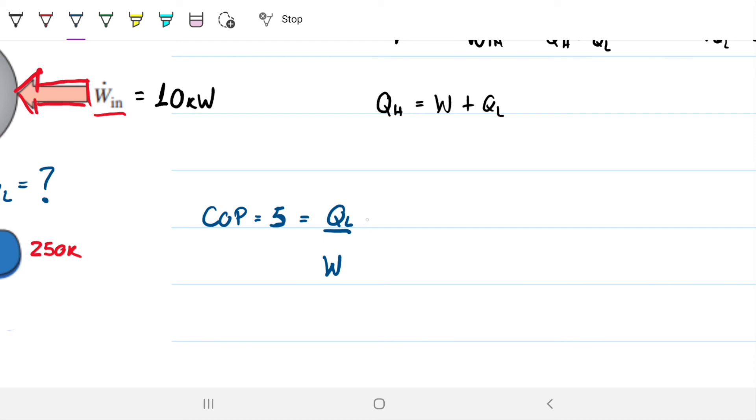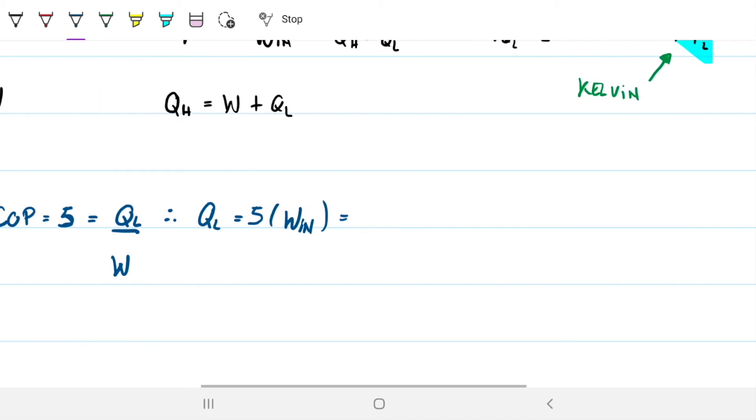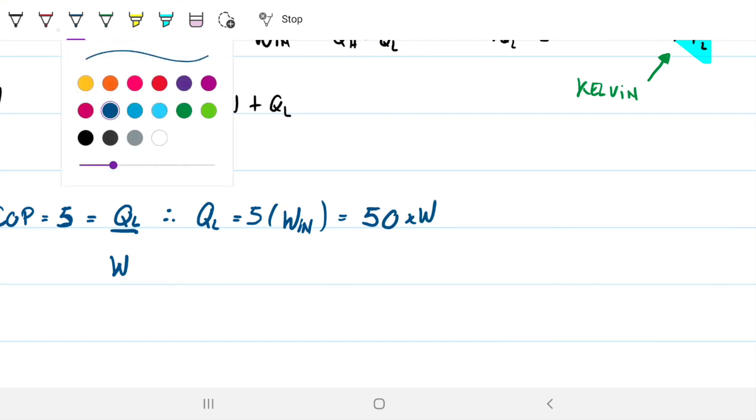We have all this information. So therefore, QL will just be 5 times what I'm putting in, which is work. And in this case, it's 10 kilowatts, so I get 50 kilowatts out of this cold environment that I'm trying to keep cold.